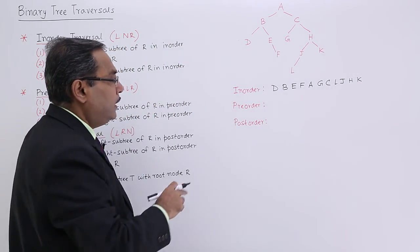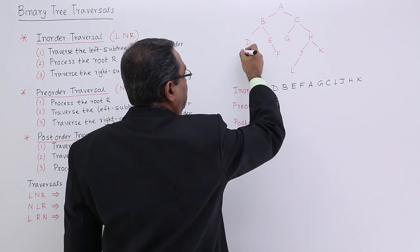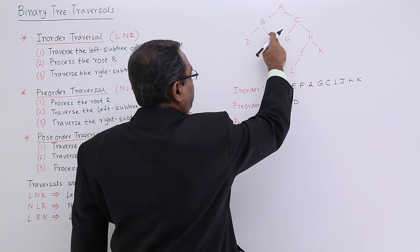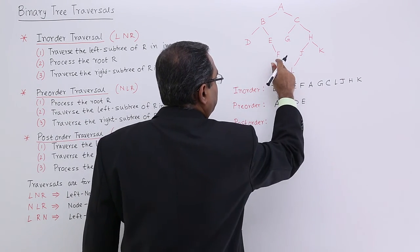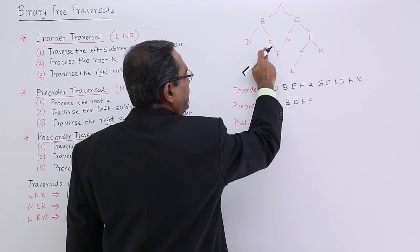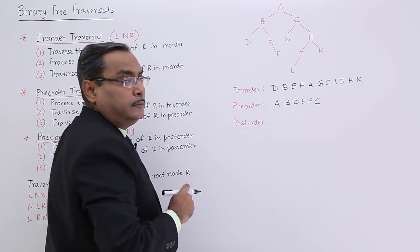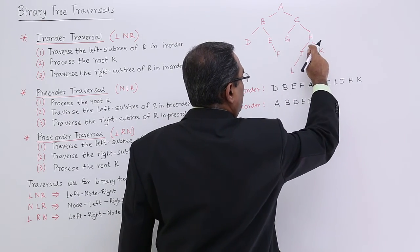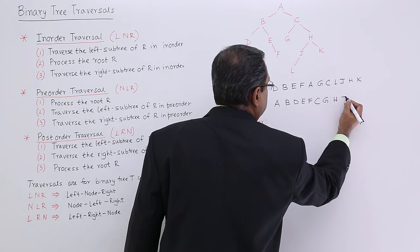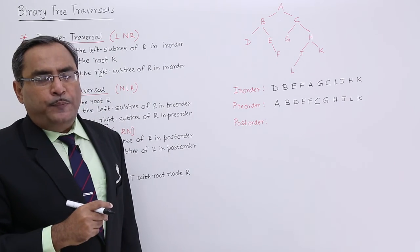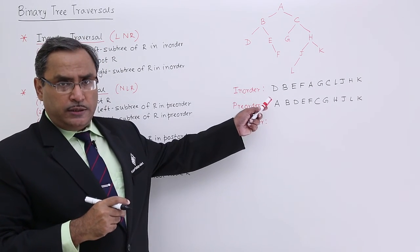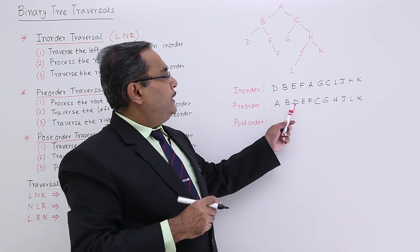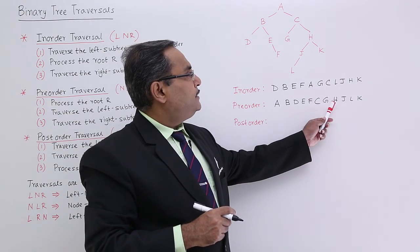How to do preorder traversal: root will come first, then left subtree — its root will come, then that subtree's root, and right subtree. So A, B, D, E, F. Now in the right subtree the root comes first: C, then G on the left subtree, then the rest on the right subtree — H, then root first, then left subtree root L, then K. So the preorder traversal is: A B D E F C G H J L K. Please recheck this from the binary tree drawn.